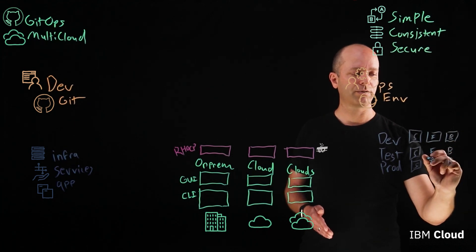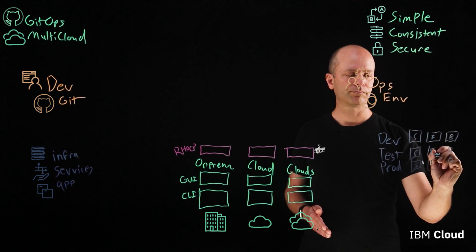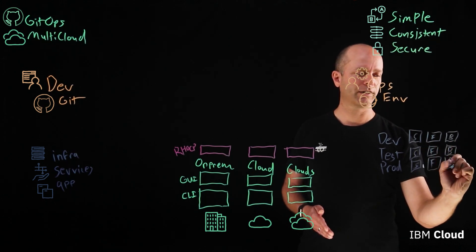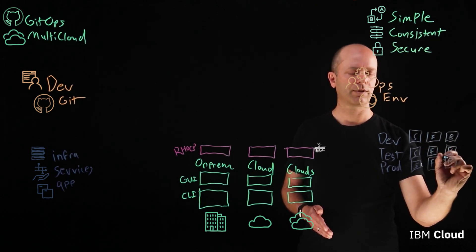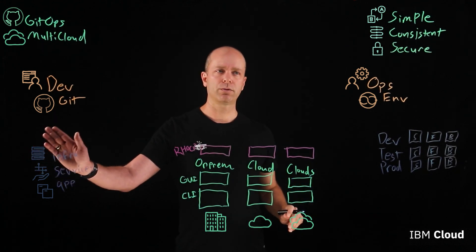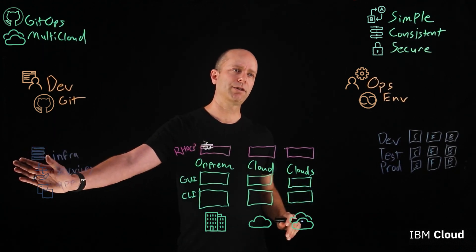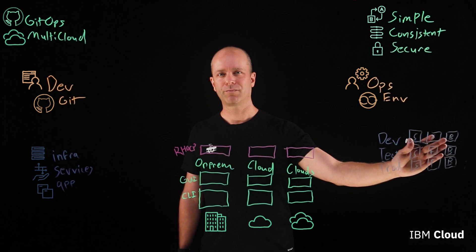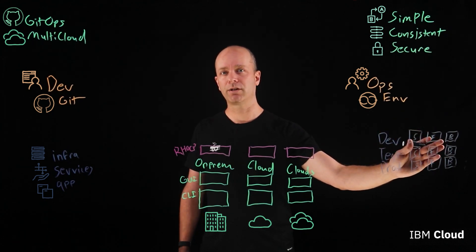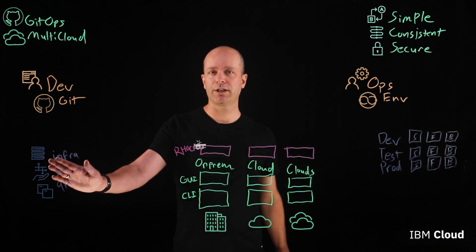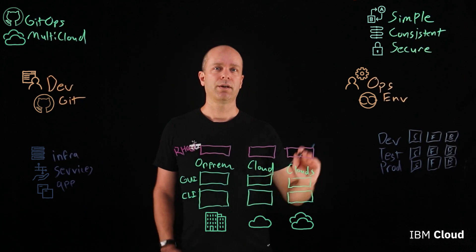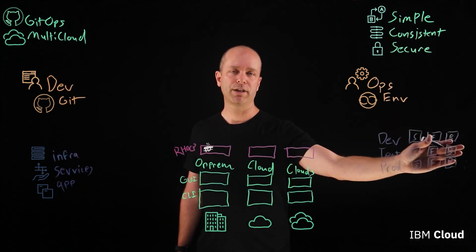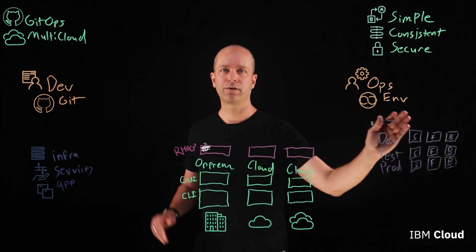Rather than using the different management consoles, when you check into Git, you have tools that are automatically ensuring your Git environment manages and matches your production environment. So as changes are made in Git, they get deployed and mirrored over to your environment so that they match.